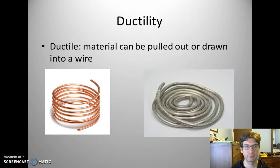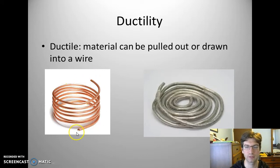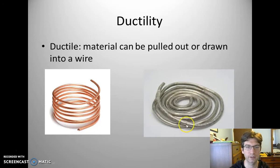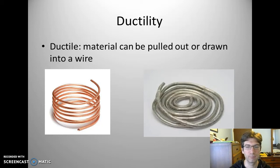Ductility is the ability to be pulled into wires. Over here we have some copper tubing — they use copper tubing a lot for distilling different liquids, like making vodka or distilled water. Different alcohols use distilling processes. Over here is aluminum wiring, which can also be pulled into wires. So metals tend to be ductile. Some are going to be better pulled into wires than others, but they should all be able to be pulled into wiring.